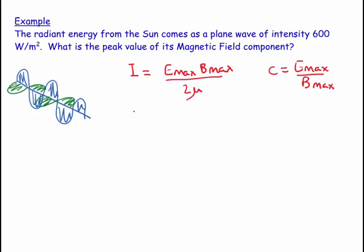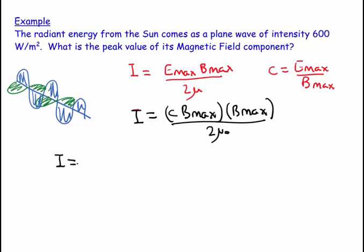So I is equal to - we're going to substitute in. We want to find the magnetic field, so let's substitute in for the electric field. That will be C times B max times B max over 2 mu naught. B max is what we want, so let me rearrange here.